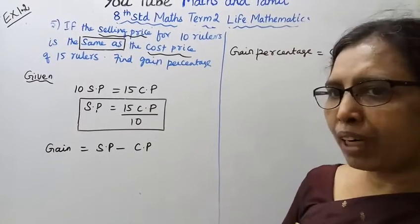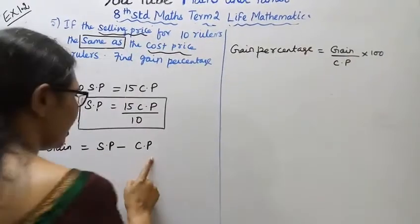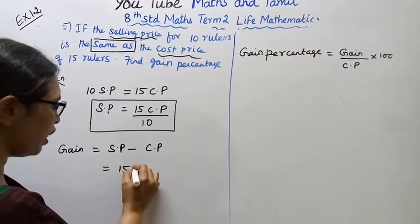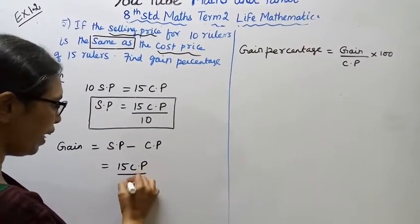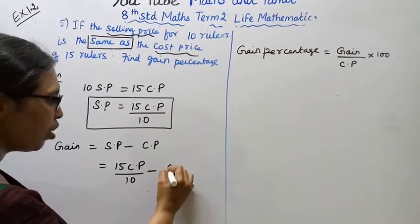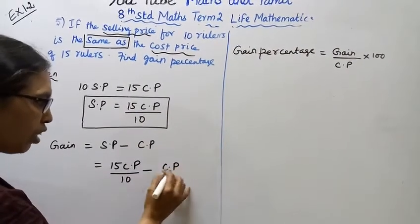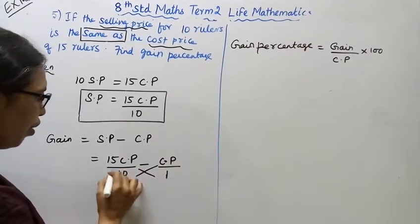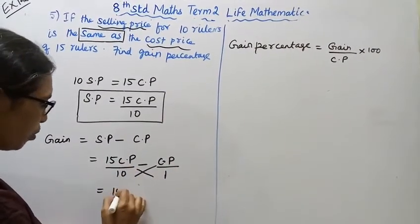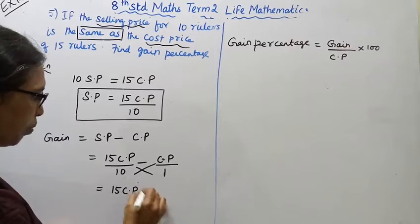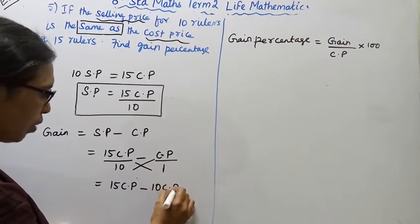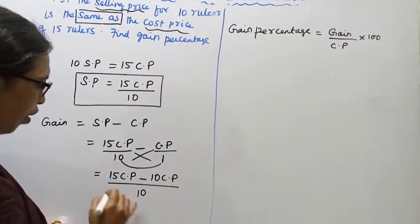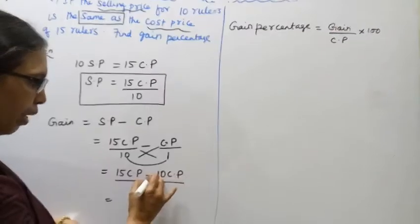The gain formula is SP minus CP — that is, selling price minus cost price. Selling price is 15 cost price by 10, minus cost price. Cross multiplying: 1 into 15 cost price gives 15 cost price, minus 10 into cost price gives 10 cost price, divided by 10.